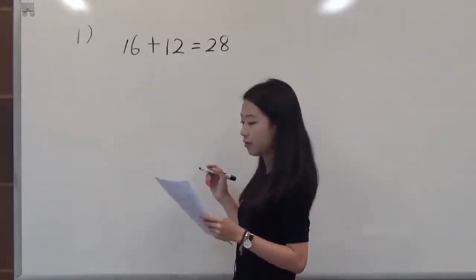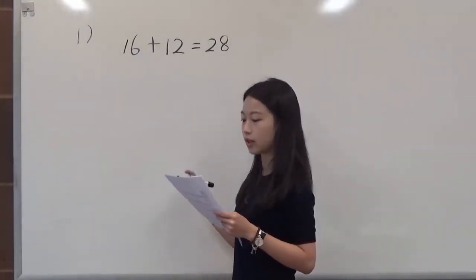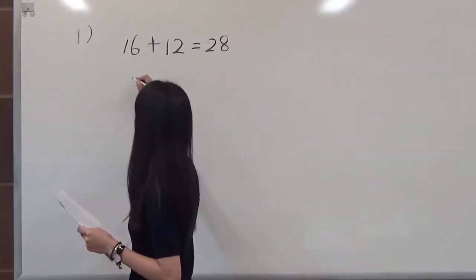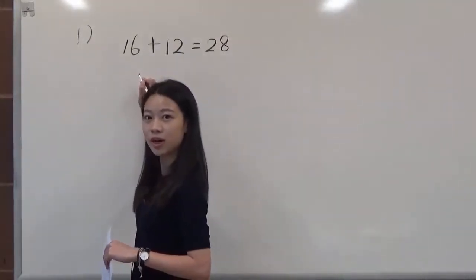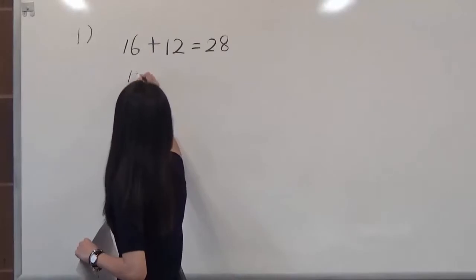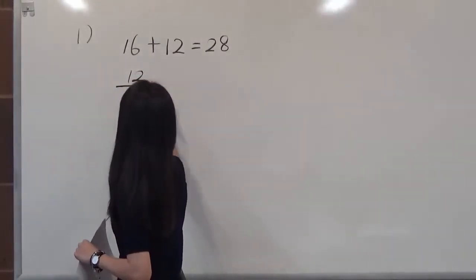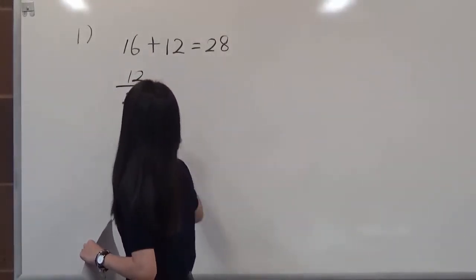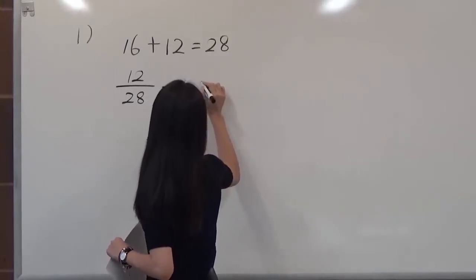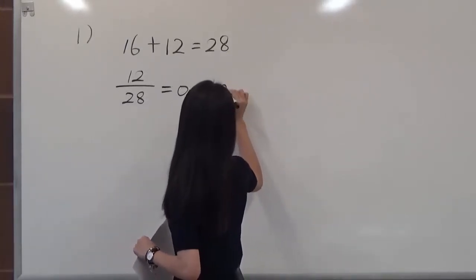And then we have to find the percentage of women in the whole class. So we have to use part divided by total, which is 12 female students divided by 28 of the whole class. We have 0.4285.